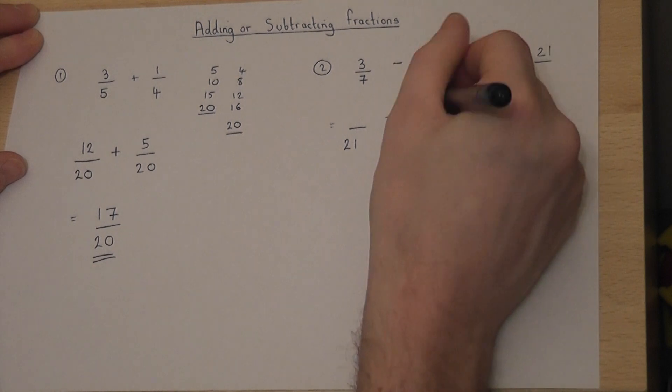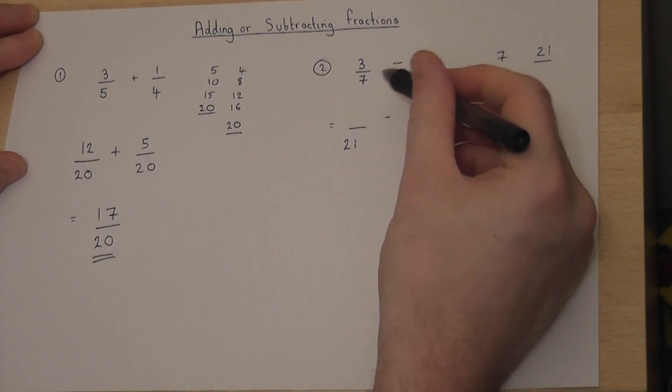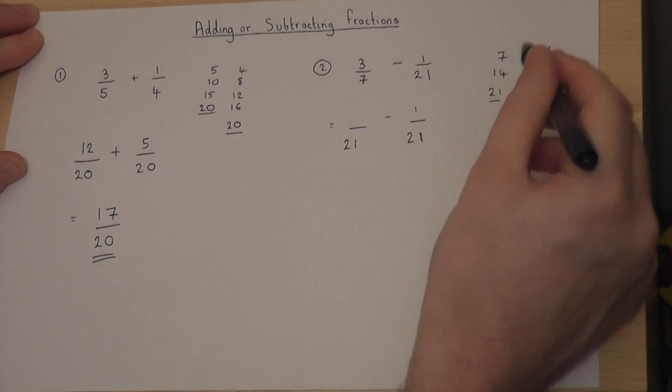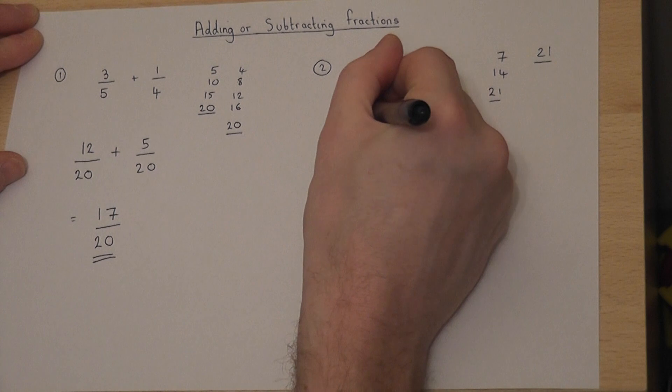This fraction has not been changed. This fraction, the top and bottom, must be multiplied by 3 (7, 14, 21). 3 times 3 is 9.